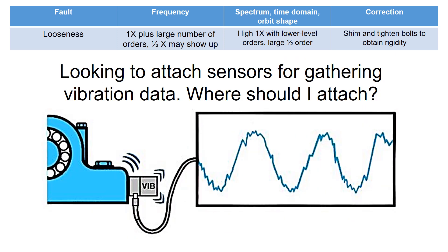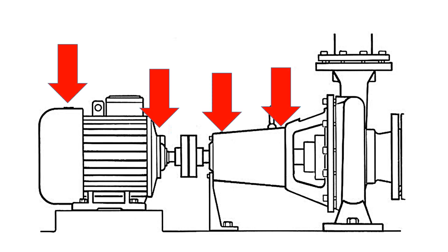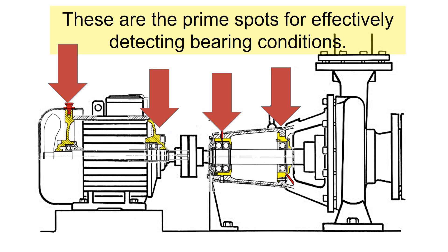So, the crucial question is: where should I attach the sensors? Here is an example of a machine layout. The optimal locations for attaching the sensors are highlighted below. These are the prime spots for effectively detecting the bearing conditions.